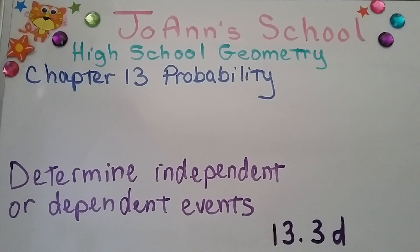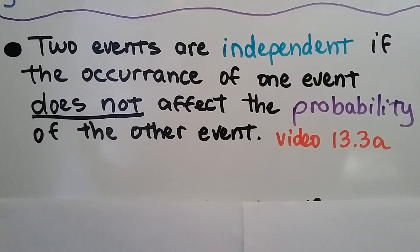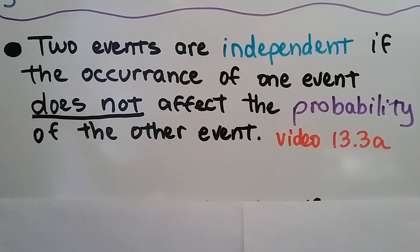We're at the fourth and final part of lesson 13.3 and we're going to talk about determining whether events are independent or dependent. You can check the description for a link to the three previous videos and to the high school geometry playlist. Two events are independent if the occurrence of one event does not affect the probability of the other event — we learned that in the first part of this lesson, 13.3a.